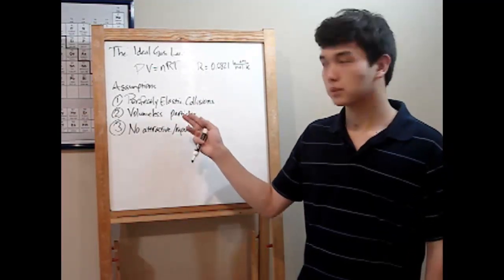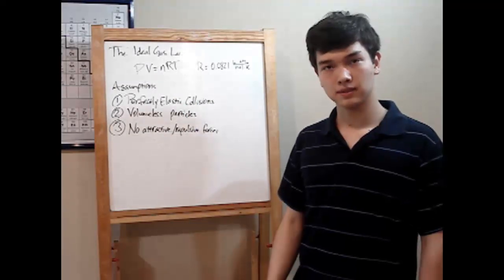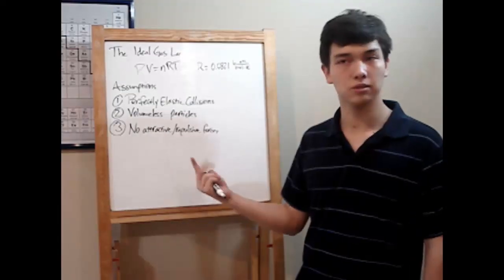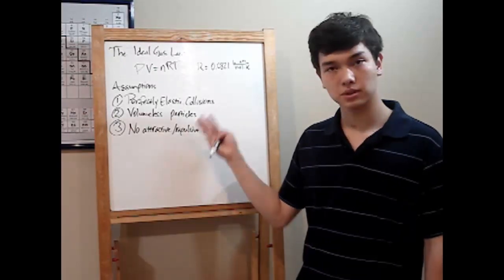The Ideal Gas Law is this small equation, PV equals nRT. You use it to calculate any one of four variables for a gas: pressure, volume, number of moles, or temperature.